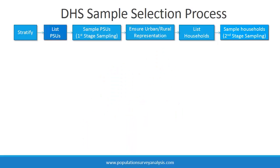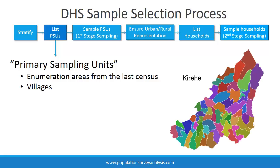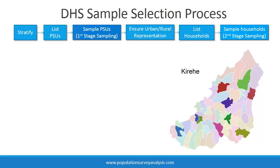Within each district, all primary sampling units, or PSUs, are listed with their population size. Typically, PSUs are the enumeration areas of the last census. In the 2010 Rwanda DHS, villages were used as the PSUs, since the previous census was out of date at that time. Then a sample of PSUs are selected with probability proportionate to population size.